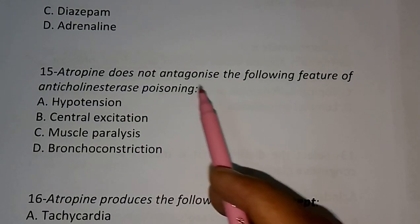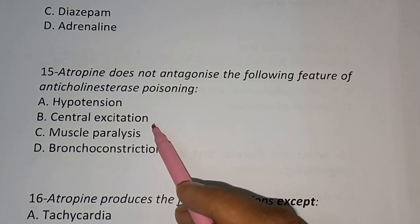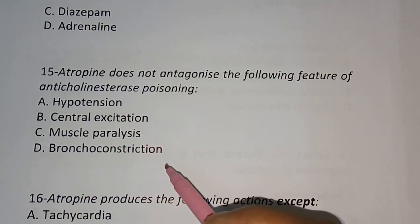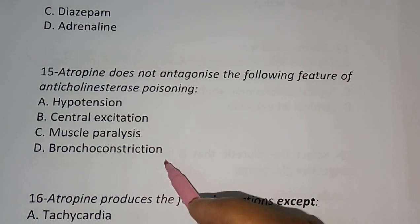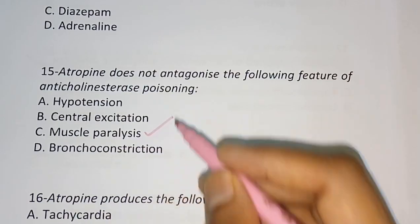Question number fifteen: Atropine does NOT produce — (A) hypertension, (B) central excitation, (C) muscle paralysis, (D) bronchoconstriction. The correct answer is muscle paralysis.